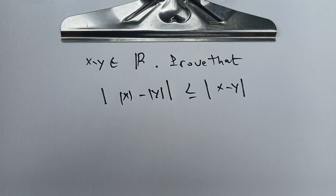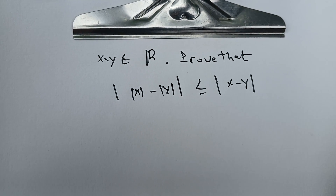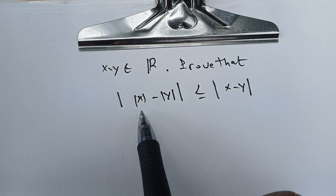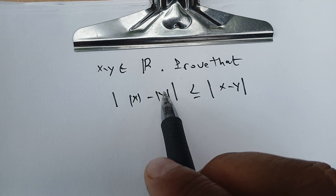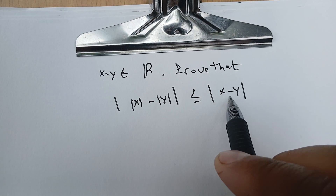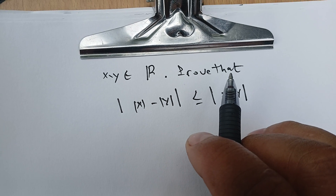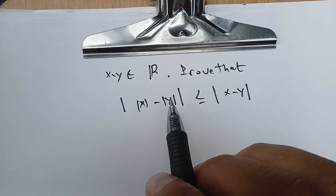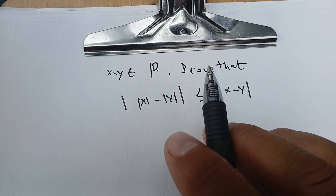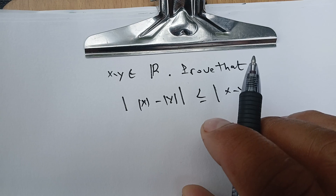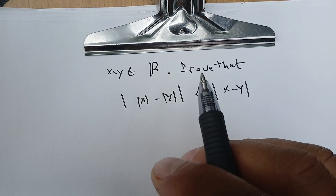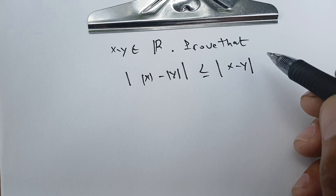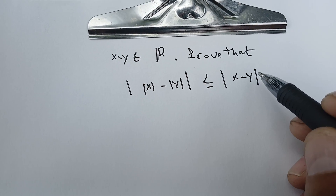Welcome back. In this video, we're going to try to prove that if we are given X and Y real numbers, we want to prove that the absolute value of the difference of the absolute value of X and Y is less than the absolute value of the difference of X and Y. This is quite useful in theory when we have to prove many properties of limits or deal with differential equations. Sometimes we need to have a lower bound and upper bound, so we need to have this property in mind.